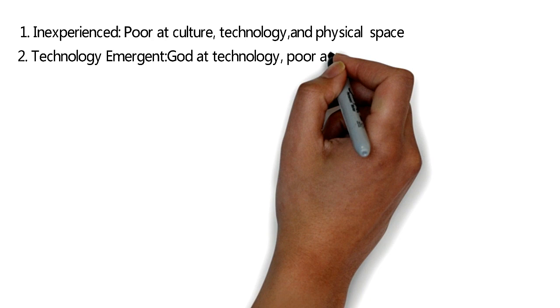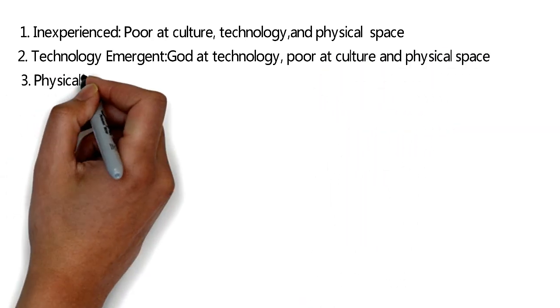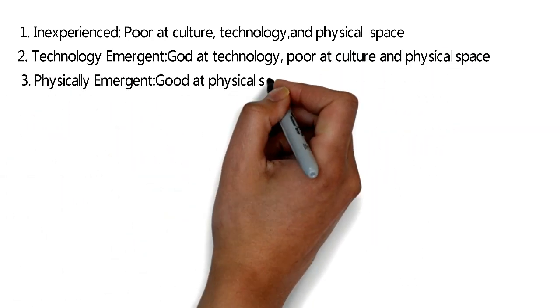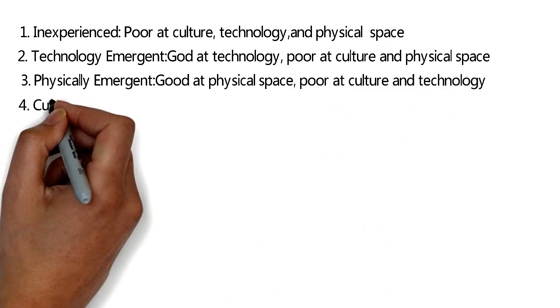2: Technology emergent—good at technology, poor at culture and physical space. 3: Physically emergent—good at physical space, poor at culture and technology. 4: Culturally emergent—good at culture, poor at physical space and technology.